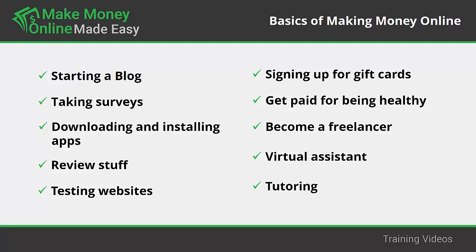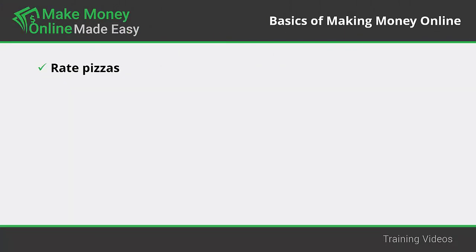Tutoring: Online tutoring services offer peer-facilitated learning experiences for undergraduates. You can choose your schedule and earn $20 per hour on platforms like Chegg Tutors. Rate pizzas: Many companies pay you for rating local pizza shops — simply get a login for TrendSource to rate the place on quality and note their delivery time, for which you can get $5 per rating.